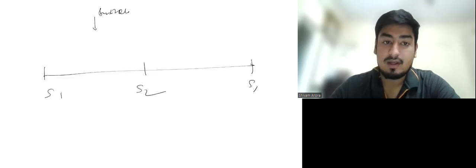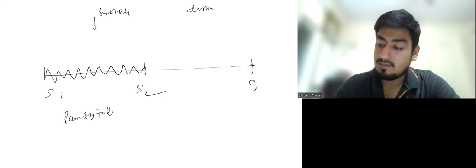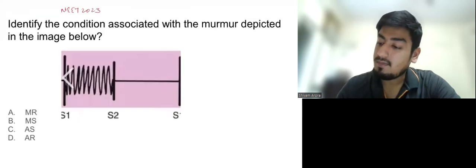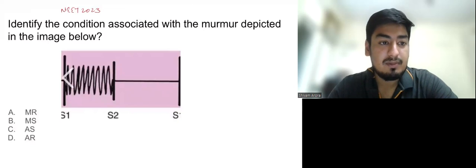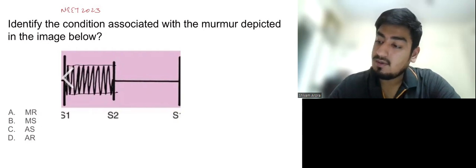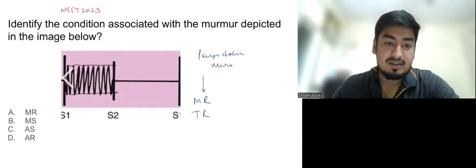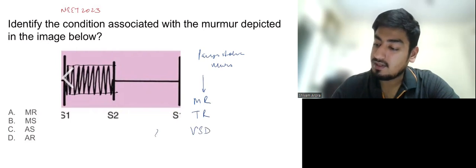Now, as we know this part is systole and this is diastole. Any murmur which comes in the complete phase of systole is a pan-systolic murmur. So this image is depicting a pan-systolic murmur and the murmur is plateau. It is not increasing or decreasing with time. The causes of pan-systolic murmur are mitral regurgitation, tricuspid regurgitation, and a small VSD.